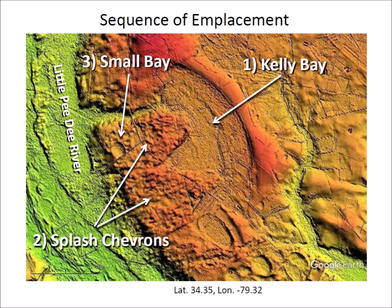Second, impacts of glacier ice on the Little Pee Dee River created splash chevrons that overlaid Kelly Bay. And third, the chevrons were impacted by glacier ice boulders with higher trajectories and longer flight times that made small bays on top of the chevrons.